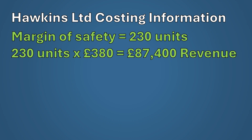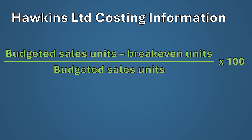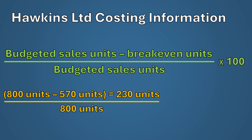Finally, to display margin of safety as a percentage, use the formula: budgeted sales units minus breakeven units, divided by budgeted sales units, multiplied by 100. Applying this to our scenario: 230 divided by 800, multiplied by 100, equals 28.75%. This represents the percentage of sales the business could lose before becoming unprofitable.